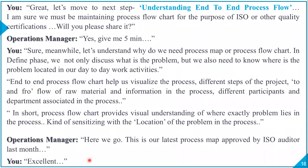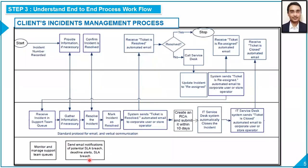In short, the process flow chart provides a visual understanding of where exactly the problem lies in the process — sensitizing us to the location of the problem. The operations manager then shares: here we go, this is our latest process map approved by the ISO auditor last month. This is the process flow chart shared by the process manager, and here you and your team discuss where the severity non-compliance occurs. Understanding the end-to-end process workflow helps locate where exactly the problem lies — what process the given problem is associated with — and what the different steps are.